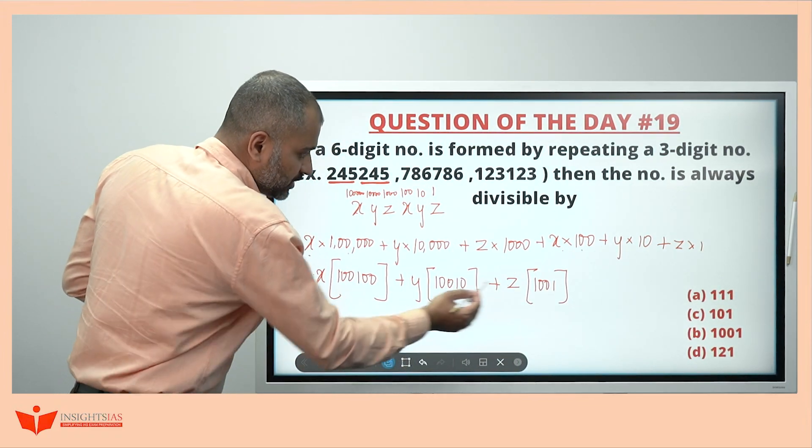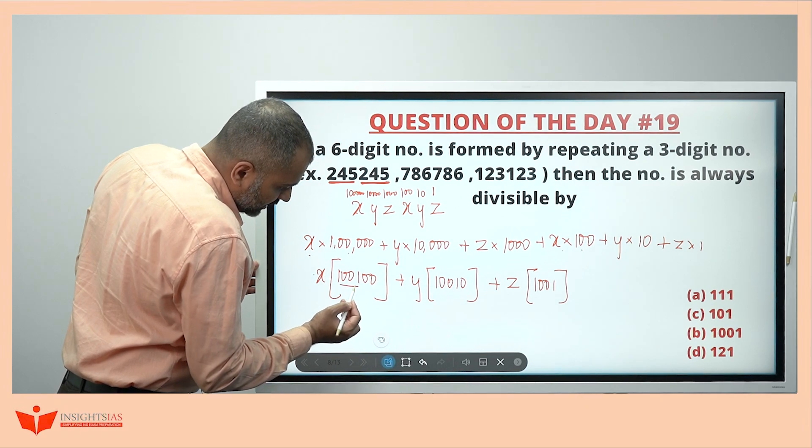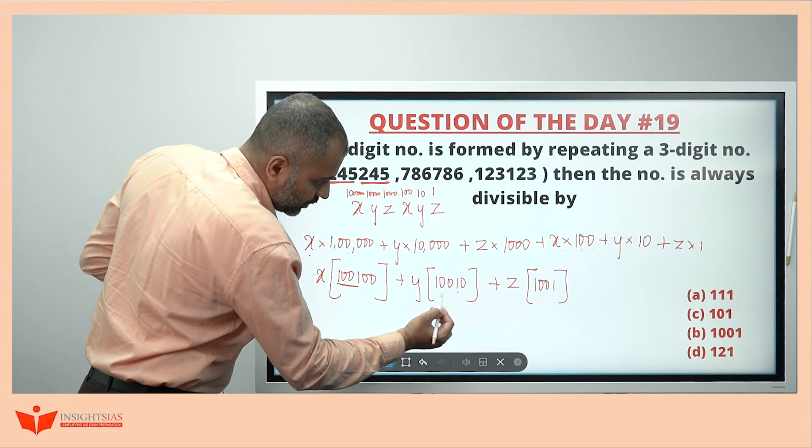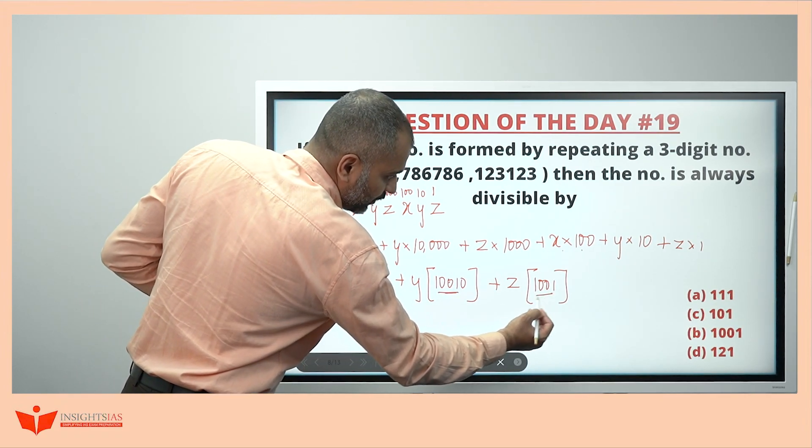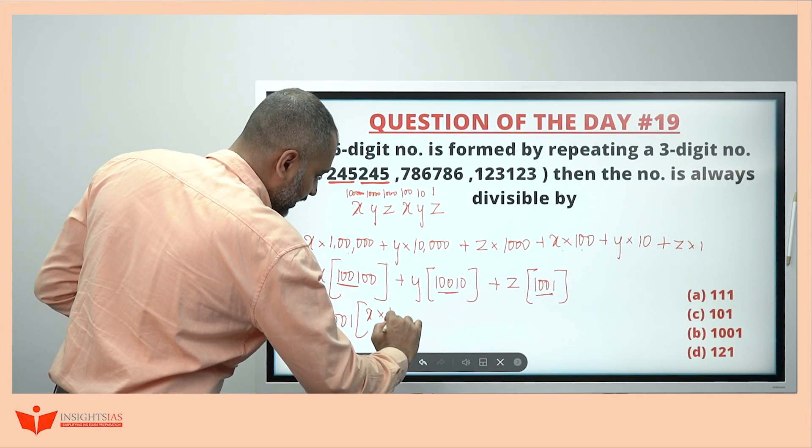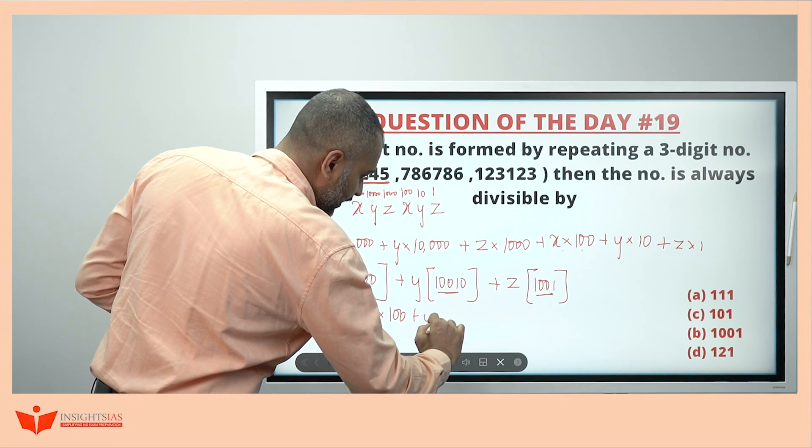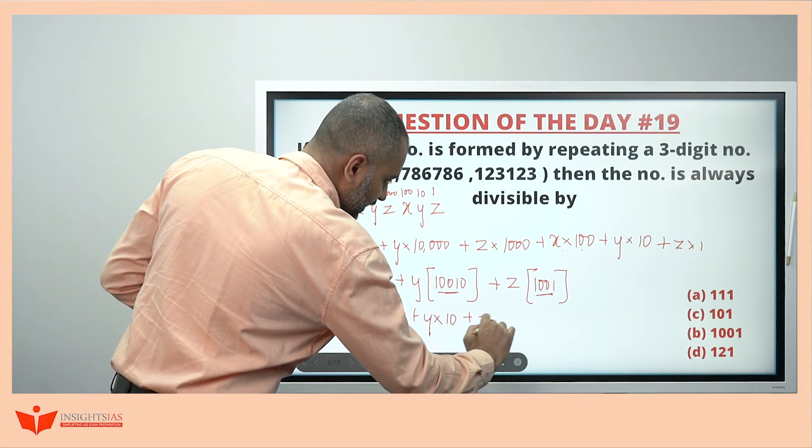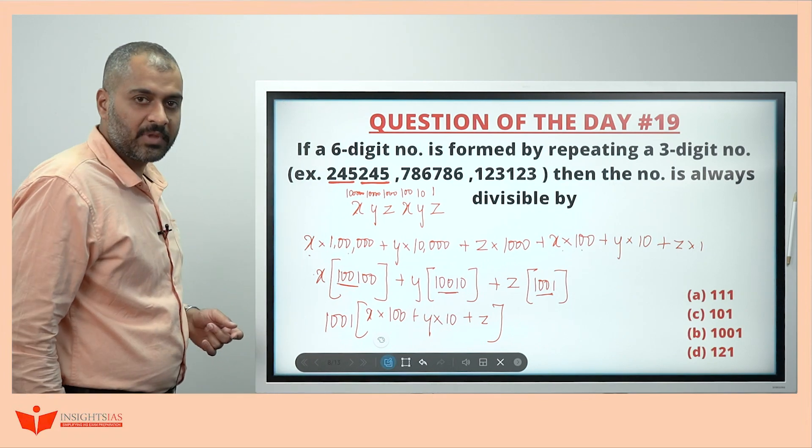See, in all these 3, this is nothing but 1001 into 100. This is 1001 into 10. This is 1001. If I take 1001 common here. So, this becomes x into 100 plus y into 10 plus z into 1 or z itself. Okay.